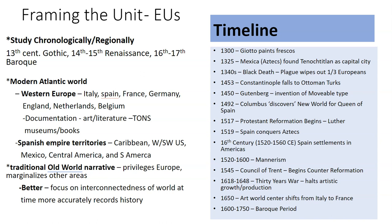I'll point out a couple highlights from the timeline: 1300, Giotto is painting his frescoes in the Arena Chapel; 1325, the Mexica are founding Tenochtitlan — the capital city we looked at with the Templo Mayor — so they're just founding their home at that point. Back in Europe, the 1340s saw plague wiping out much of Europe. In 1453, Constantinople fell to the Turks. Around 1450, Gutenberg invented the printing press. In 1492, Columbus went to the New World. The Protestant Reformation followed shortly after, in 1517. In 1519, Spain conquered the Aztecs, and in the 16th century Spain began their settlements.